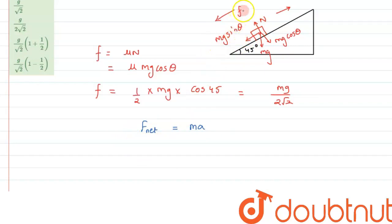...first is mg sin theta and f in the downward direction. So we can write f plus mg sin theta, since both are in the same direction, so we are adding them up.